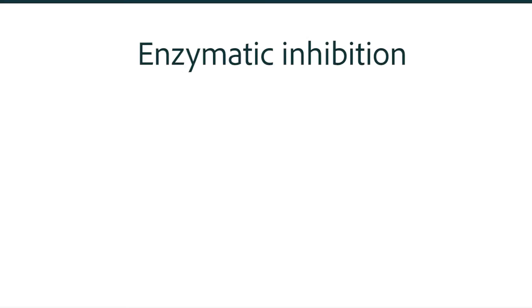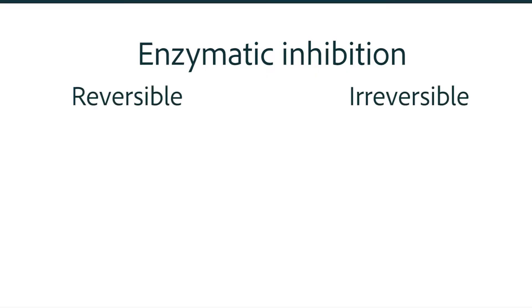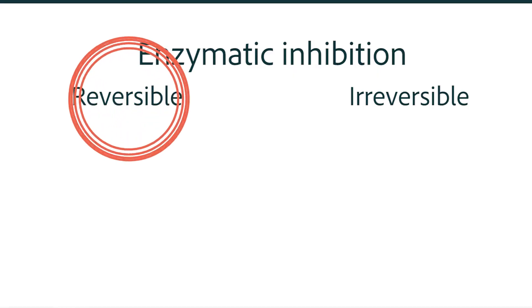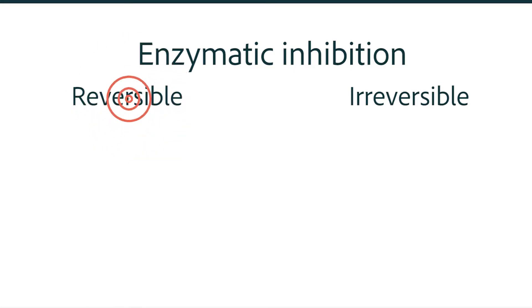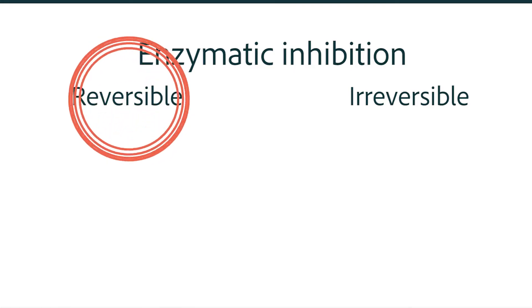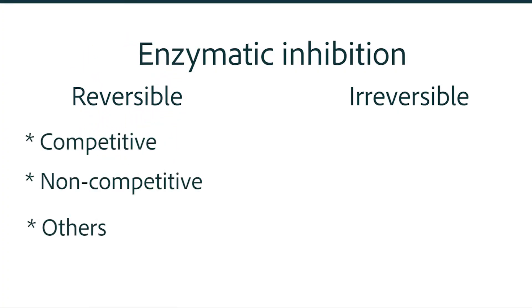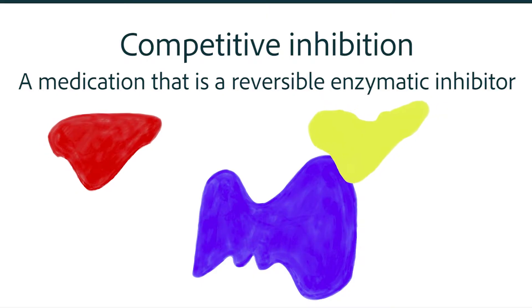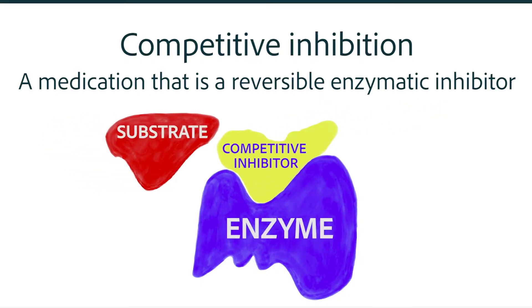When you think of enzymatic inhibition, you should immediately think of two major types of enzymatic inhibitors: the reversible inhibitors and the irreversible inhibitors. By far the largest group of enzymatic inhibitors is the reversible inhibitors, and those are divided into at least four subsets. Clinically speaking, the most important group of reversible inhibitors is the competitive inhibitors. In competitive inhibition, the medication binds to the active site of the enzyme and prevents the binding of the substrate.